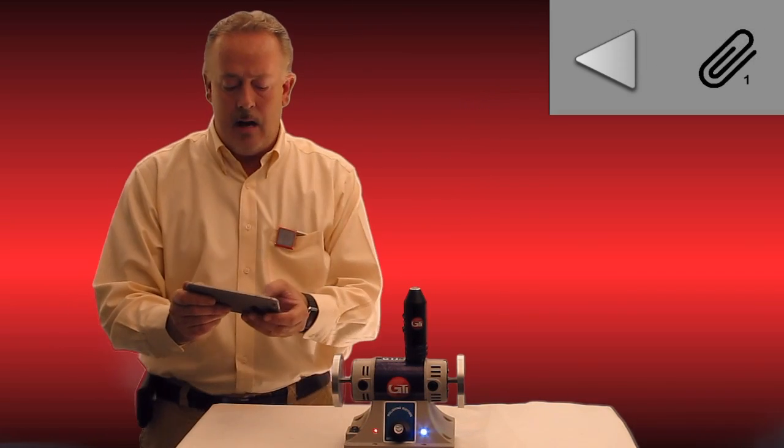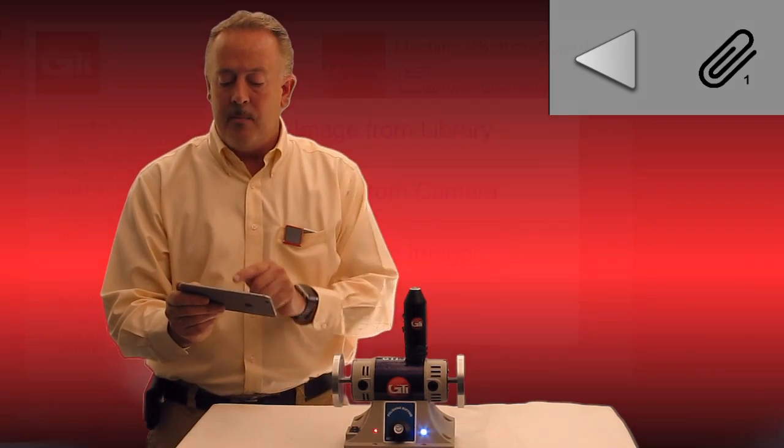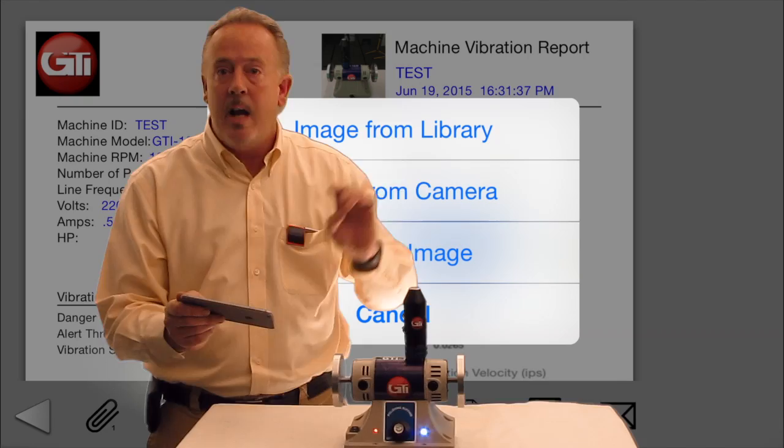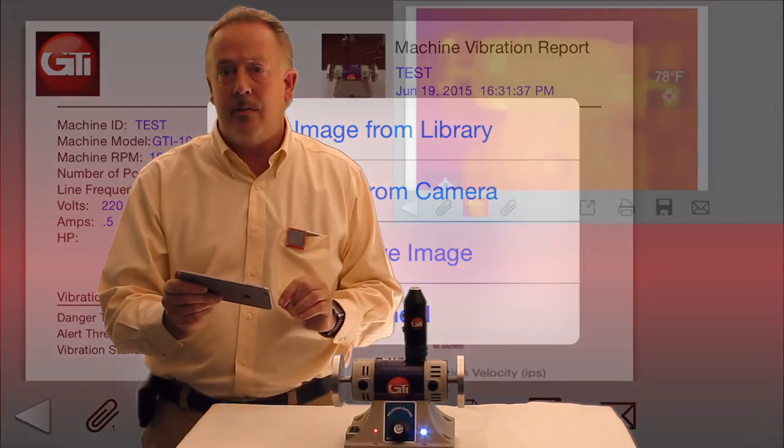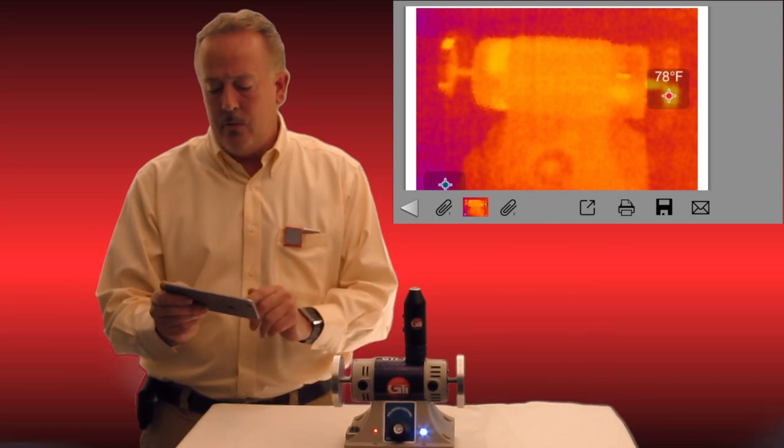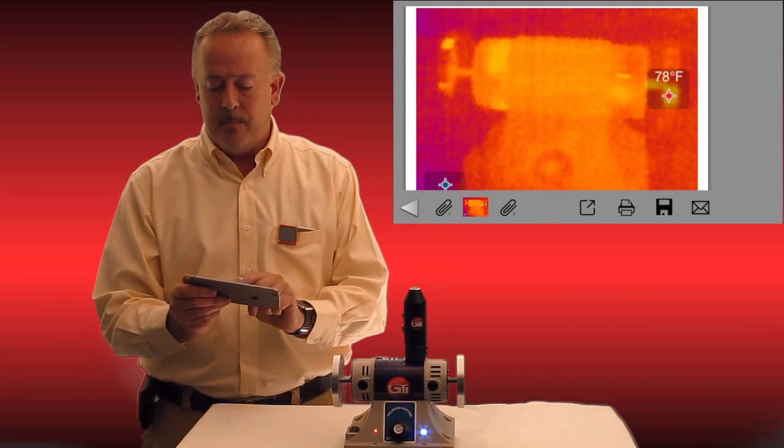Also, you see a paperclip there. I can also paperclip from the library, meaning the photo library, or from the camera image, any other spectrum or photo that I've saved, like a thermal image from my thermal image camera. I can post to this report and simply email it out.